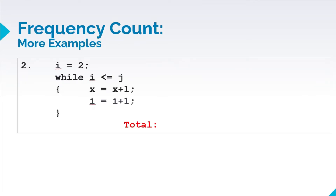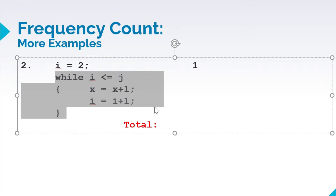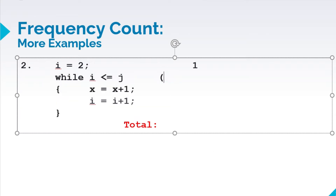Next, we have this one. It uses the iterative statement while. So therefore, we'll apply the formula for iterative statement. But before that, let's have first this one. Since this one is declared outside the loop, that means that it's a simple statement — i is equal to 2. So that is counted as 1. Then next, since this is the iterative statement or the while loop, we'll apply the upper bound minus lower bound plus 2.